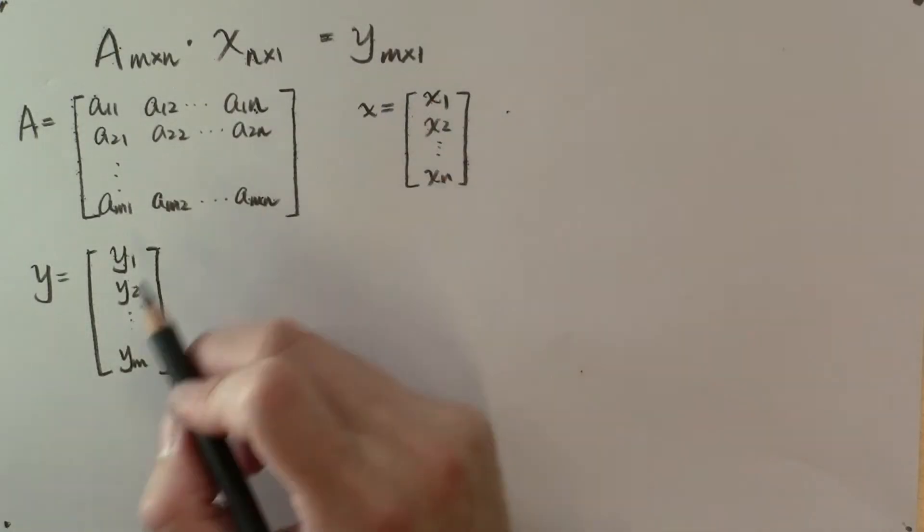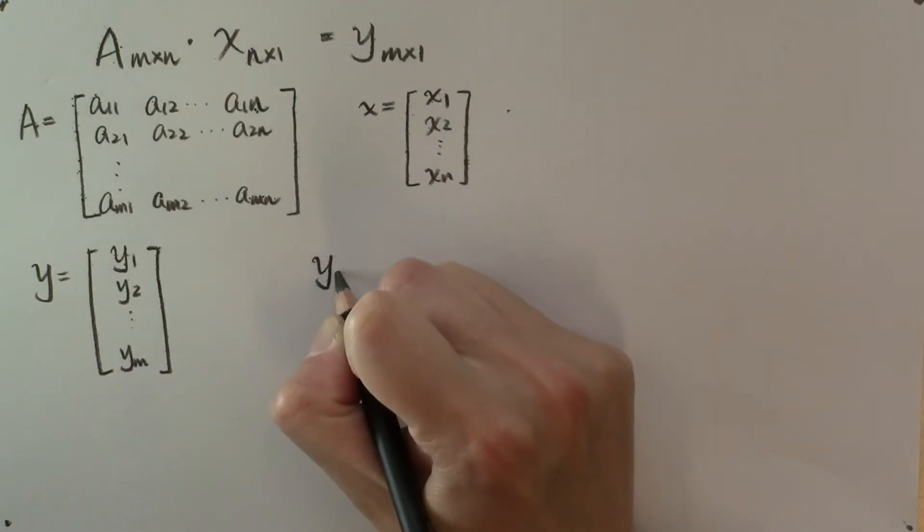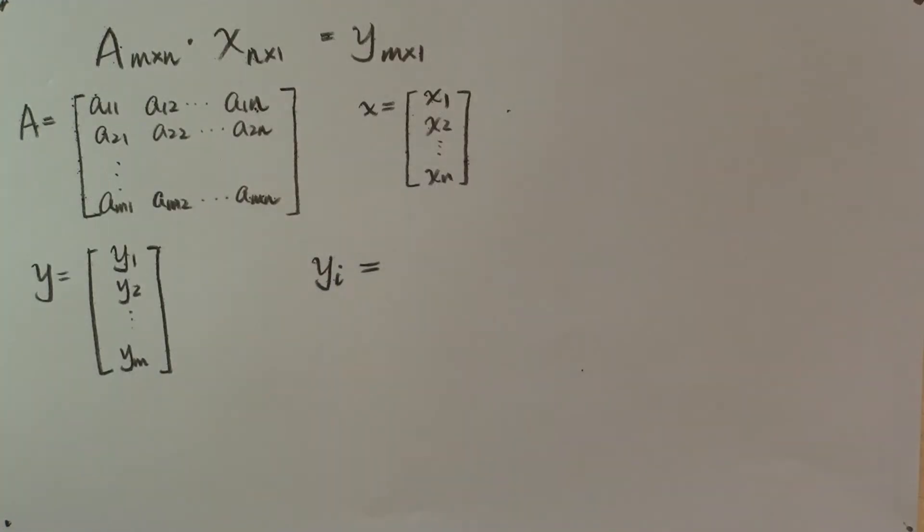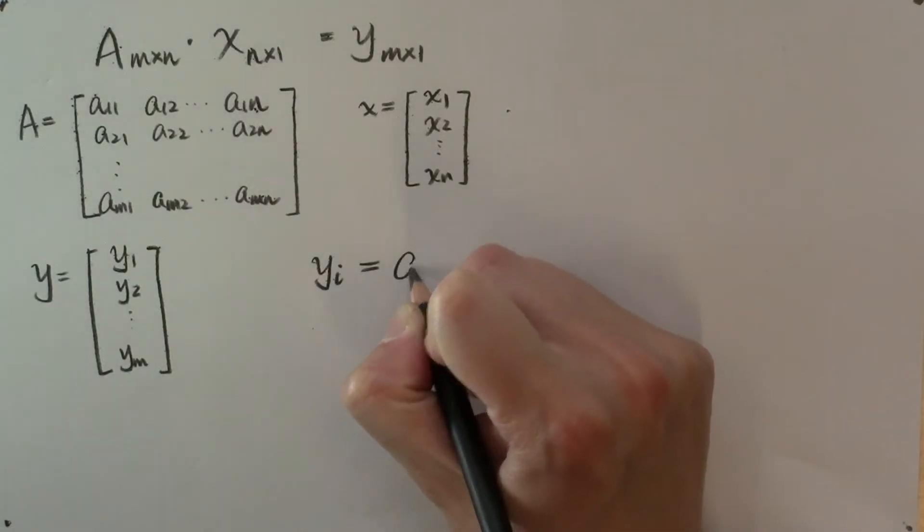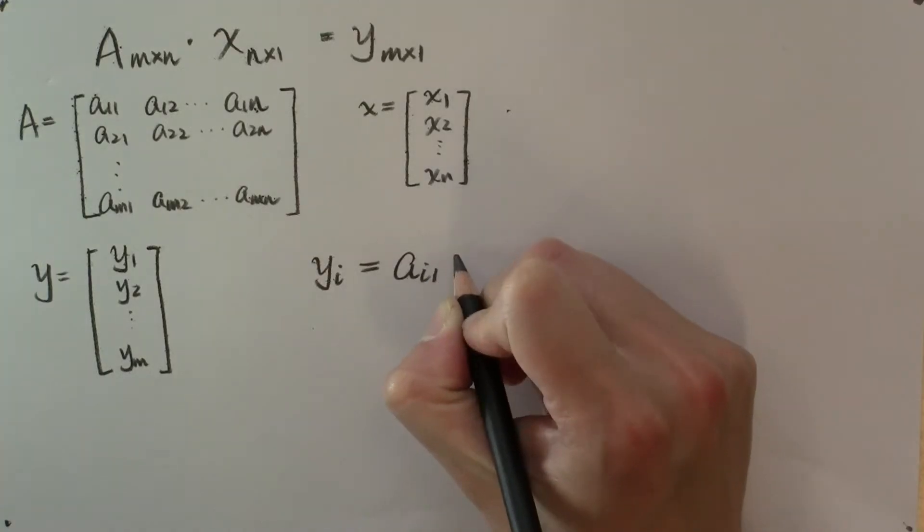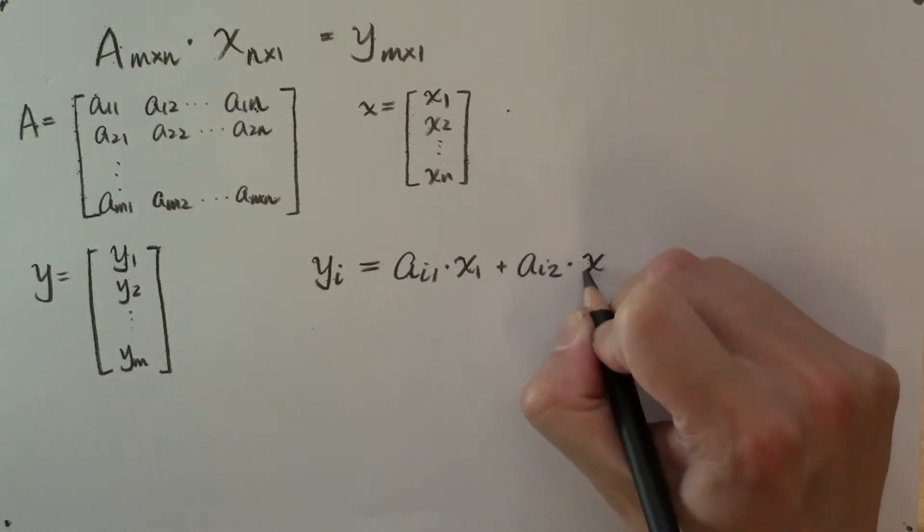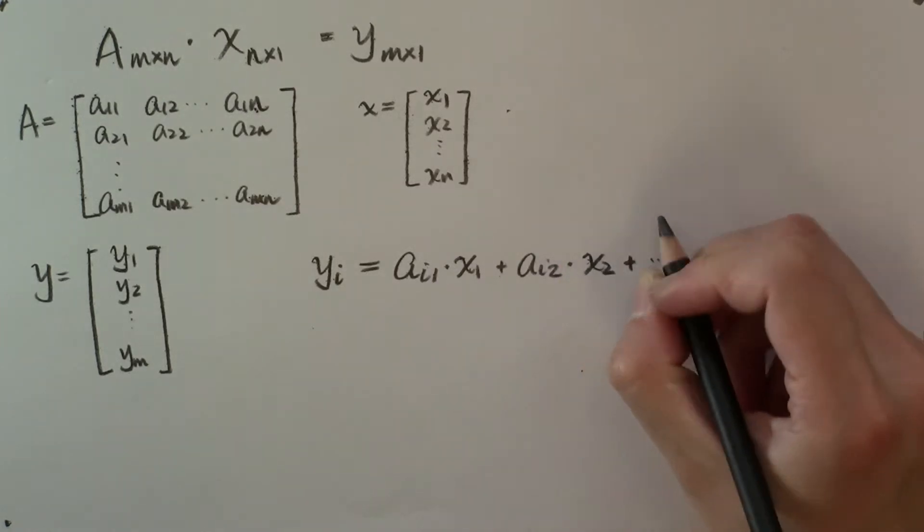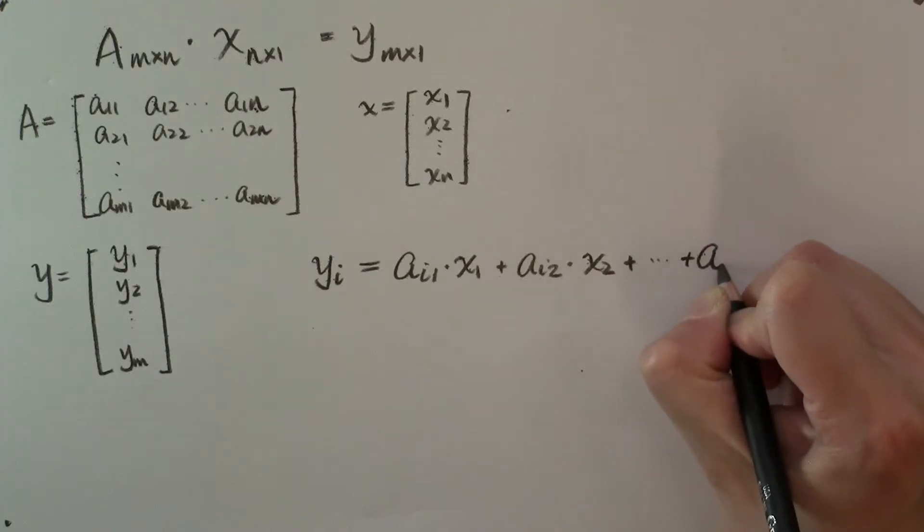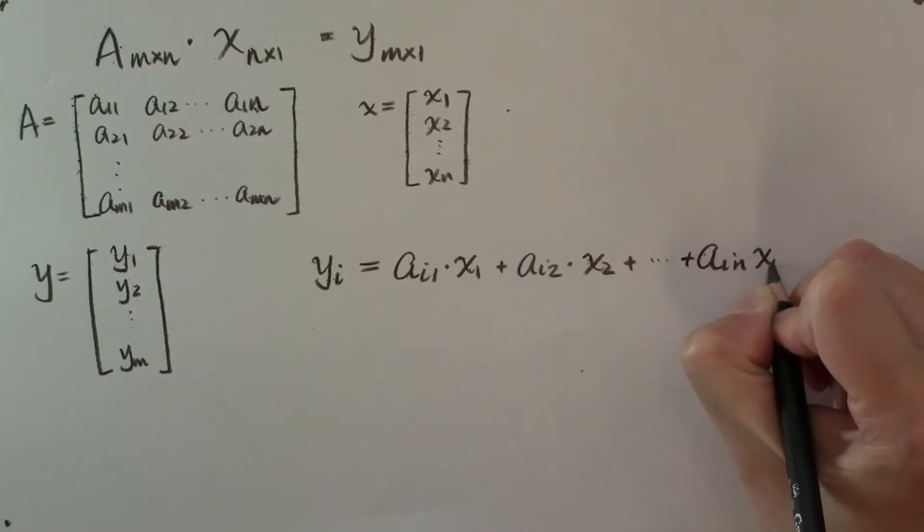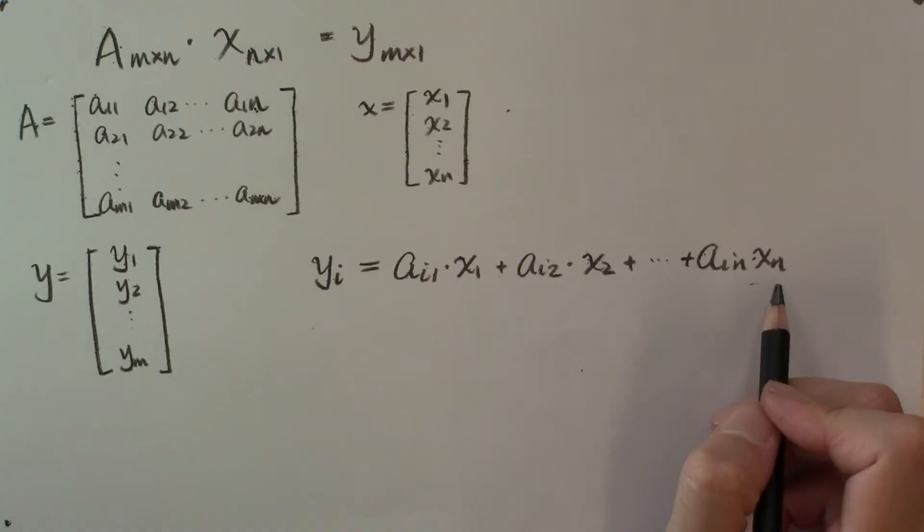This product y is defined as the following. The i-th element of y is equal to the sum that is a sub i 1 multiplying x 1 plus a sub i 2 multiplying x 2 plus etc., plus a sub i n multiplying x n. Doesn't this sum look familiar?